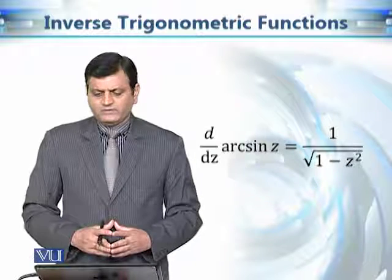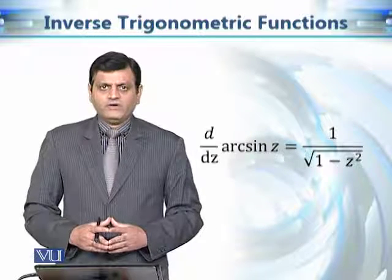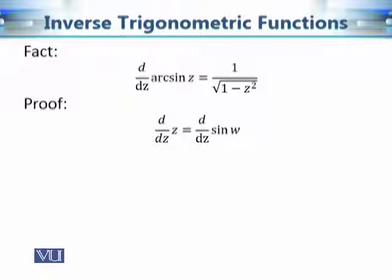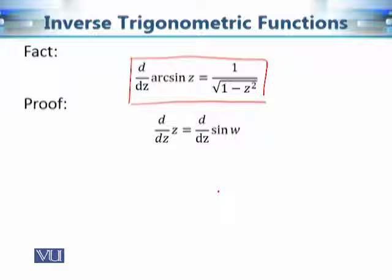If we consider one branch of arc sine z, then its derivative is going to be equal to 1 over the square root of 1 minus z squared. This is a simple result to prove. We want to show that d/dz of arc sine z equals 1 over the square root of 1 minus z squared. If w equals arc sine z, then z equals sine w.